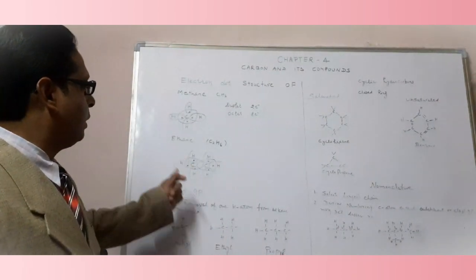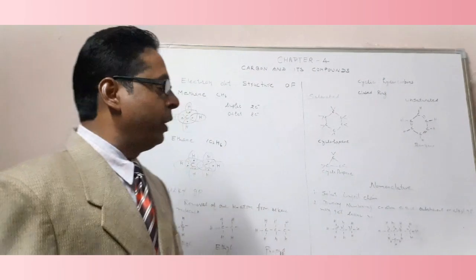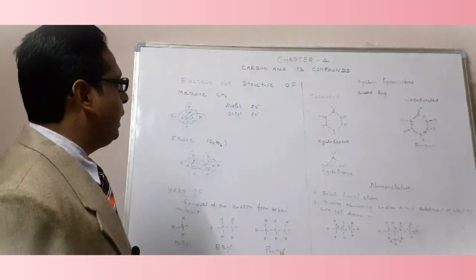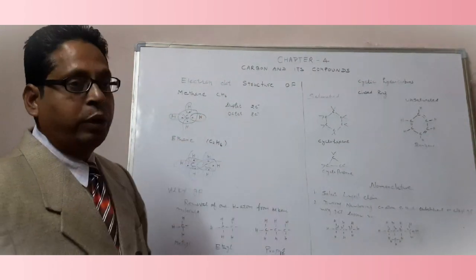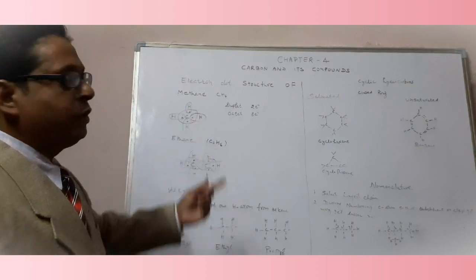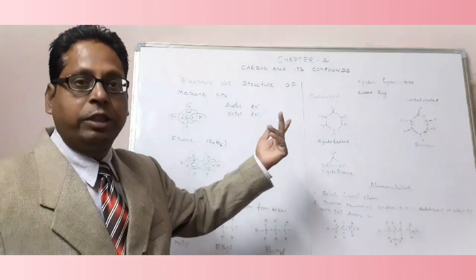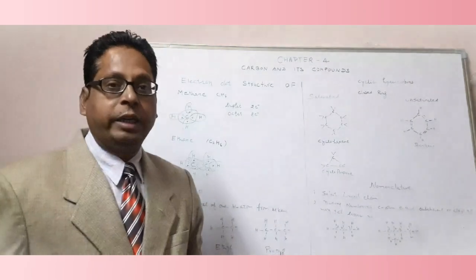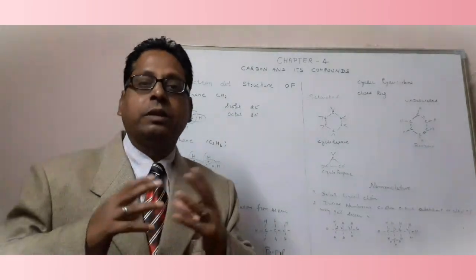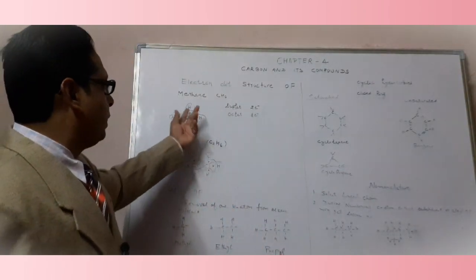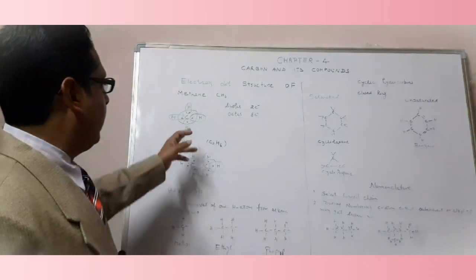In the case of methane, as you know, it belongs to the alkane family and has the formula CH4, meaning carbon is bonded to four hydrogen atoms. Any bond will be formed when an atom completes its duplet — that means two electrons — or its octet, meaning eight electrons.